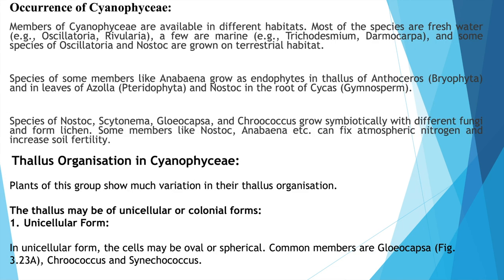Members of Cyanophyceae are available in different habitats. Most species are freshwater — for example, Oscillatoria and Rivularia. A few are marine, such as Trichodesmium and Dermocarpa. Some species of Oscillatoria and Nostoc grow in terrestrial habitats as well. Species of Anabaena grow as endophytes in the thallus of Anthoceros, which is a bryophyte, and in the leaves of Azolla, a pteridophyte. Nostoc is found in the roots of Cycas.